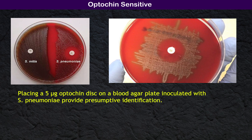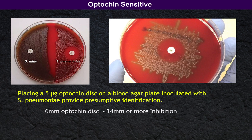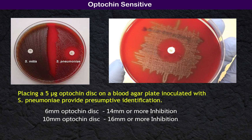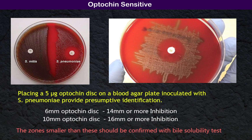Placing a 5-microgram optochin disc on a blood agar plate in a incubator with S. pneumoniae provides presumptive identification. The zone of inhibition should be 14 millimeters or more around a 6-millimeter optochin disc, or 16 millimeters or more around a 10-millimeter optochin disc. Zones smaller than these should be confirmed with the bile solubility test.